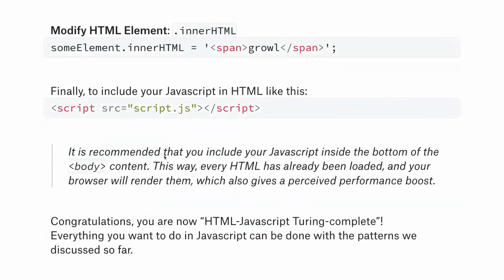If you want to modify an HTML element, just assign the innerHTML of any element to a string and you'll have something inside the HTML. To include JavaScript in your page, use a script tag — I recommend including it at the bottom of the file. Congratulations — that was a crash course in JavaScript. Now let's move on to the good stuff.